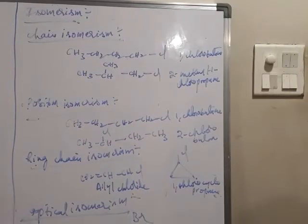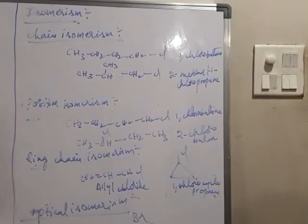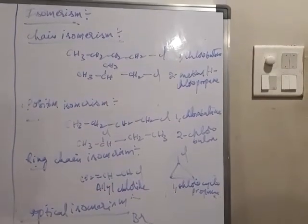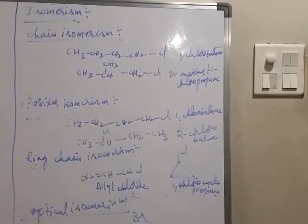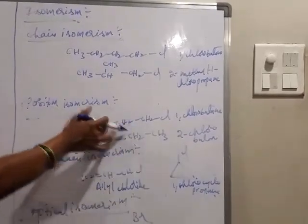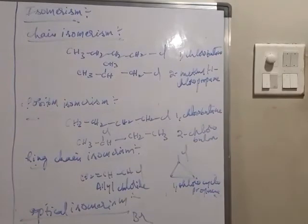Next position isomerism. Compounds having same molecular formula but differ in the position of halogen atom. This is 1-chlorobutane, chlorine is at the first carbon. Next one is 2-chlorobutane, chlorine is at the second carbon.